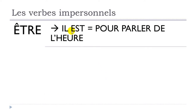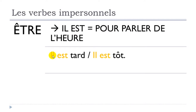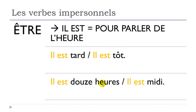For être, for instance, if you use il est, you will use this structure if you want to talk about the time. For example: il est tard — tard is 'late' — so il est tard means 'it is late.' So even if we use il, it doesn't carry the concept of 'he' as it normally would — it's really the impersonal form. And then: il est douze heures, or il est midi — douze means 'twelve,' heures means 'hours,' and midi is 'noon.'